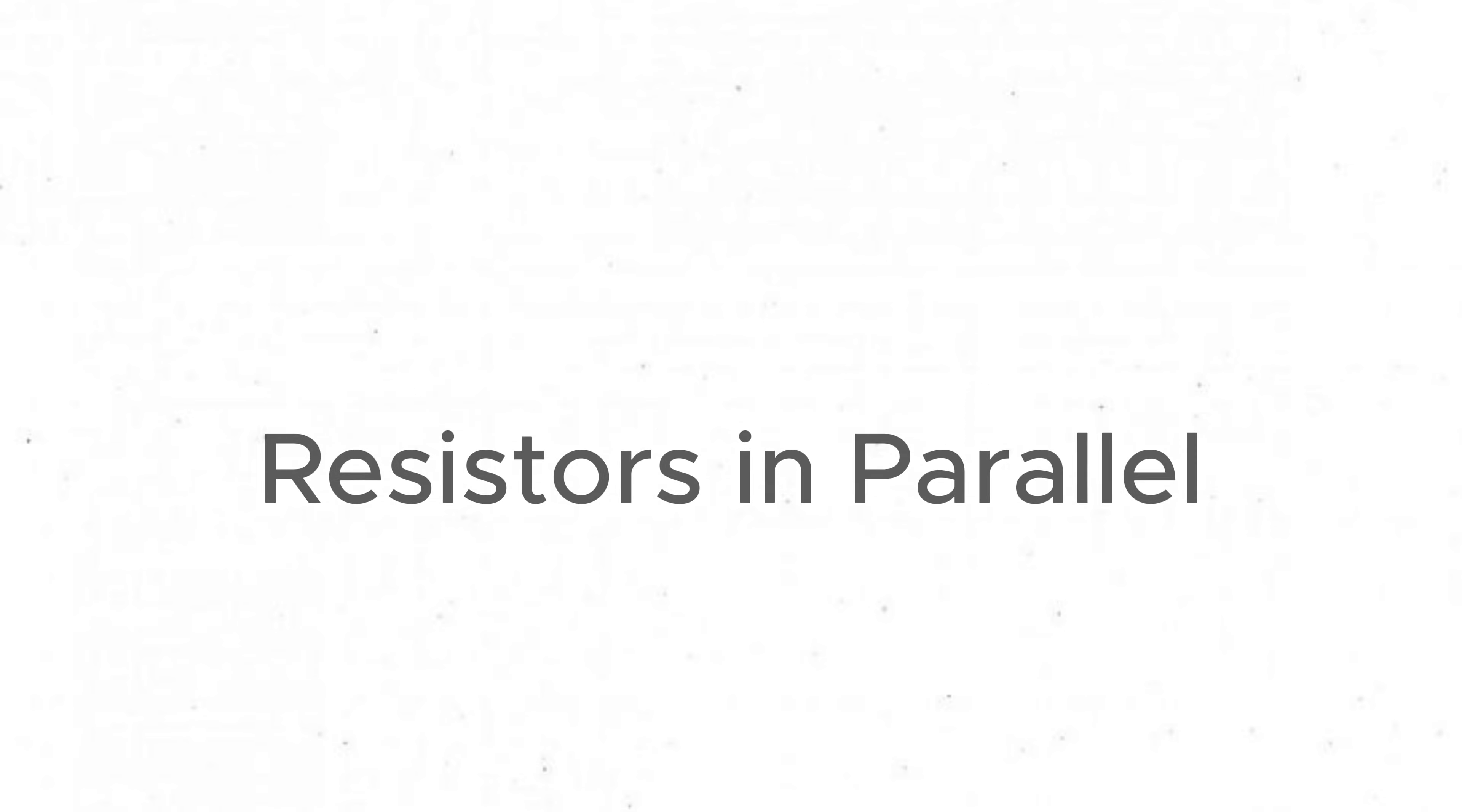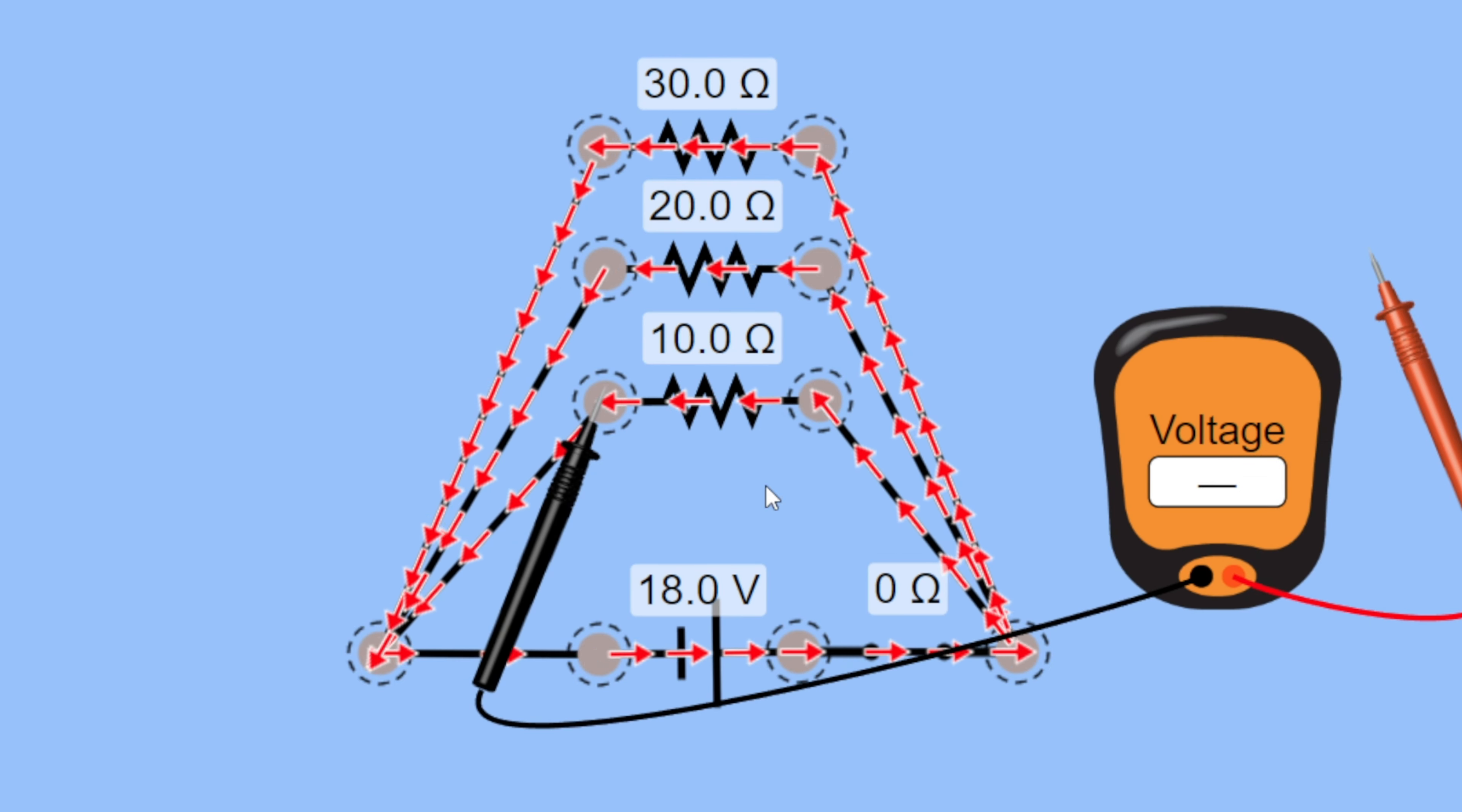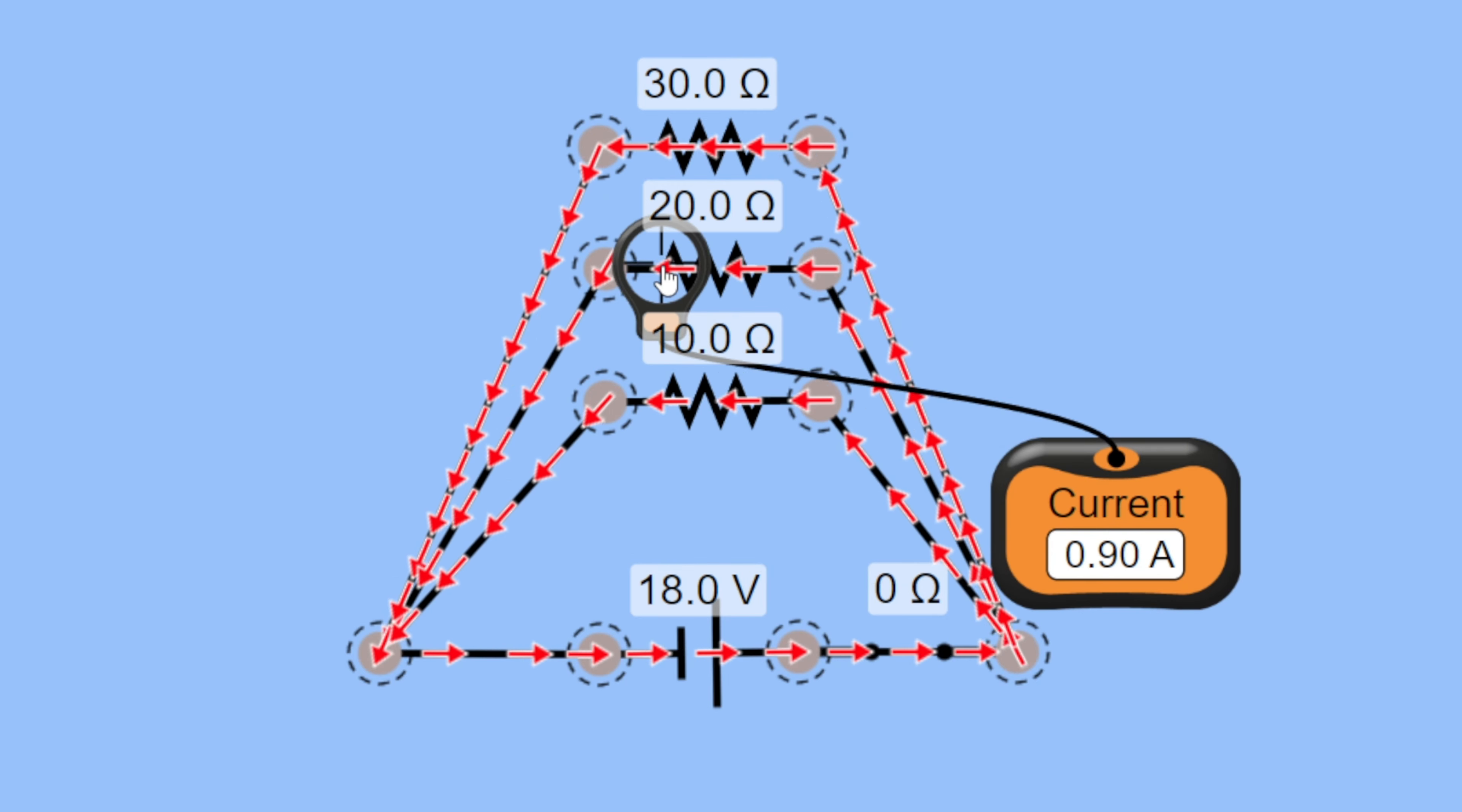Next is resistors in parallel. Two or more resistors are said to be in parallel if current has multiple paths to go through the arrangement. In this case the potential difference through each resistor remains the same while the current across them is variable.